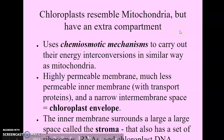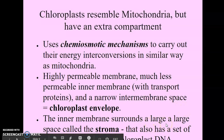The chloroplast resembles the mitochondria but has an extra compartment. Like the mitochondria, chloroplasts use chemiosmosis to carry out their energy conversions. Chloroplasts have a highly permeable outer membrane but a much less permeable inner membrane, with transport proteins within those membranes. They also have a very narrow intermembrane space between the outer and inner membrane called the chloroplast envelope. Finally, the inner membrane surrounds a large, fluid, liquidy space called the stroma, which is analogous to the matrix of the mitochondria or the cytoplasm of the cell.